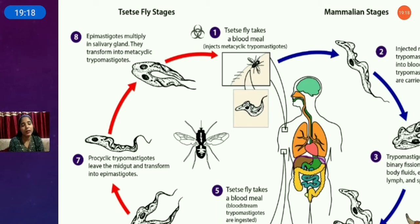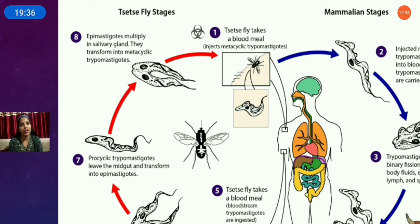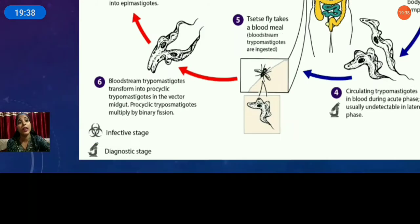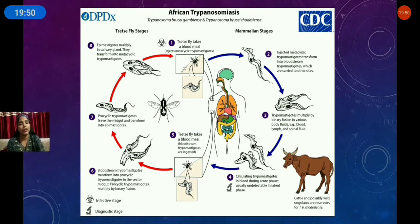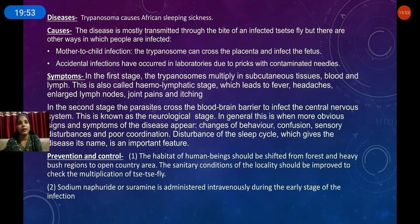The metacyclic stage in the salivary gland is the infective stage. When a tsetse fly bites a normal person, the metacyclic trypomastigotes transfer into the human body and the whole life cycle runs again.